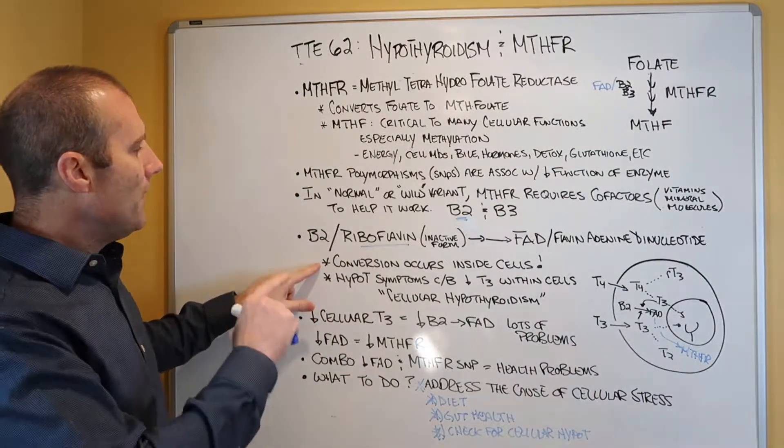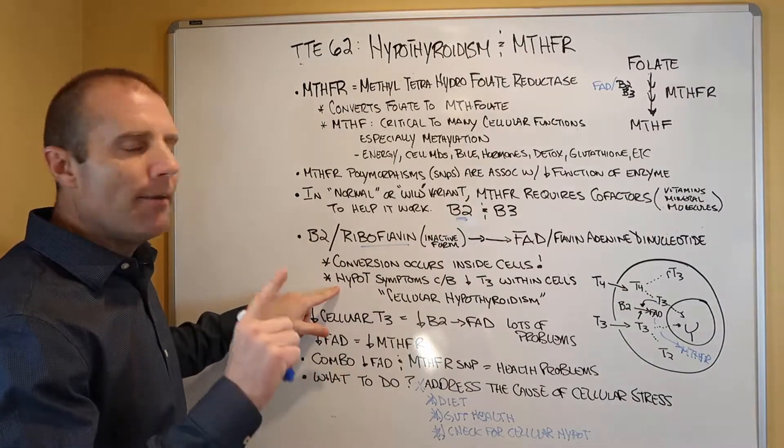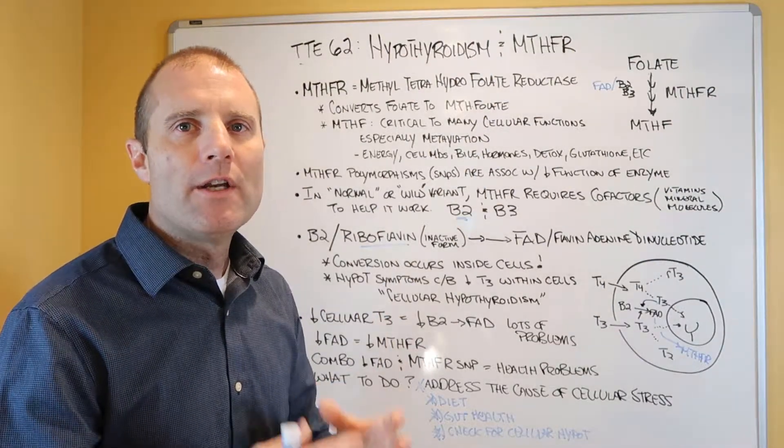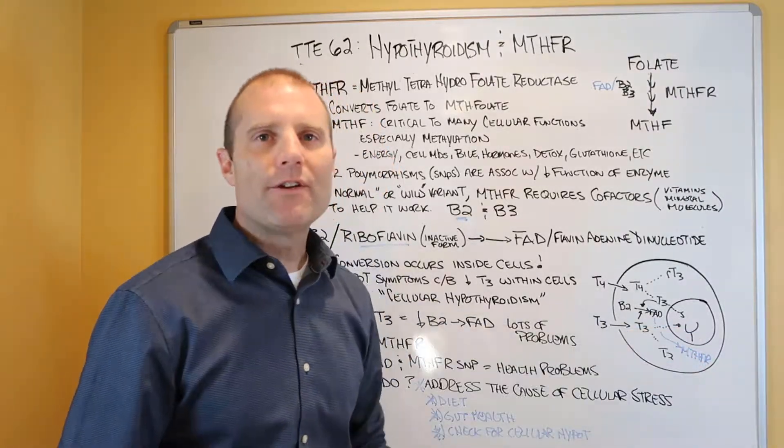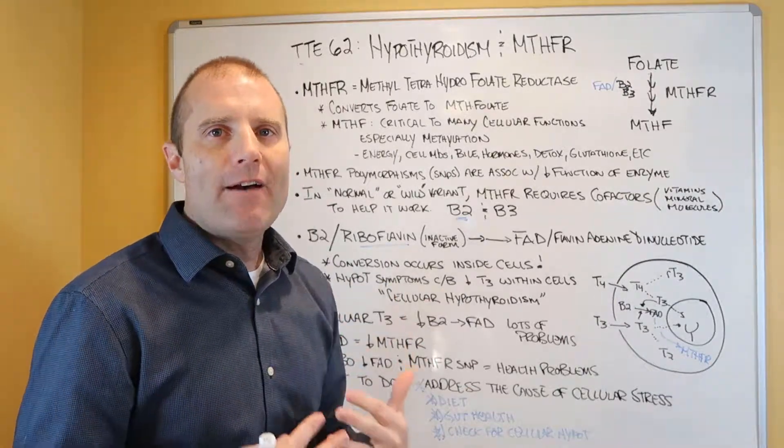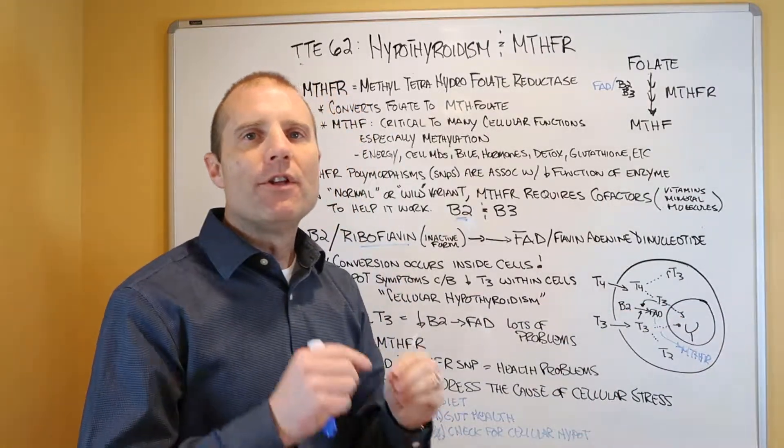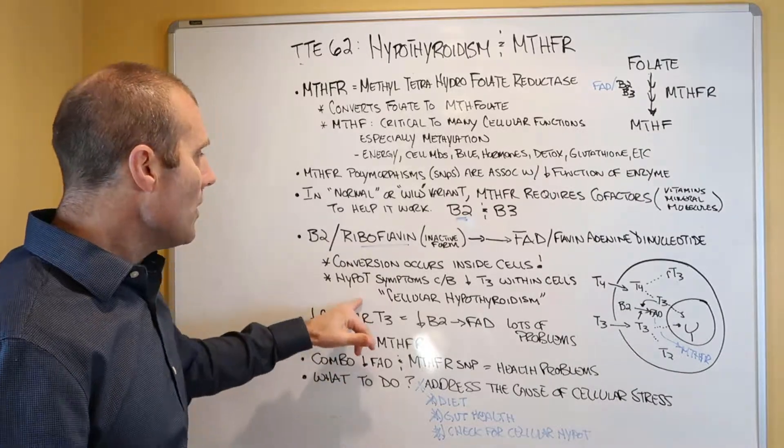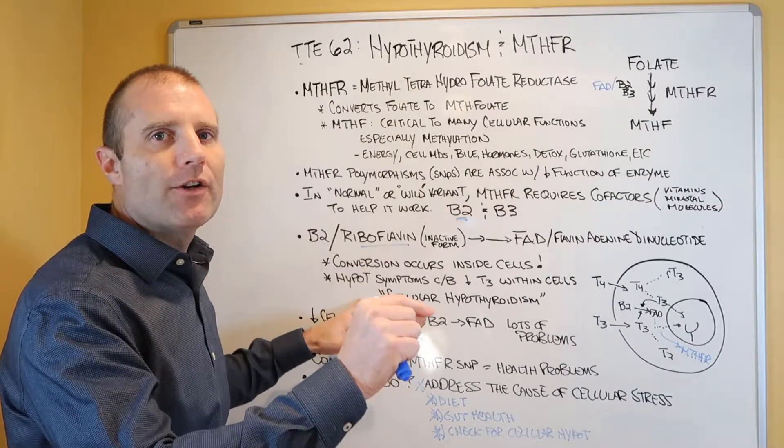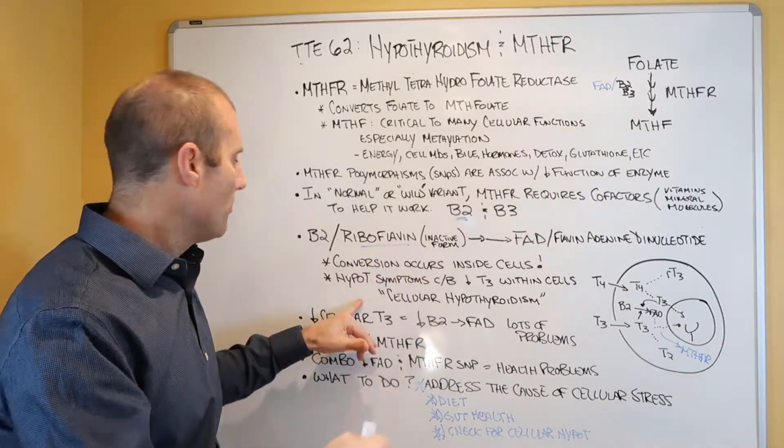The conversion of B2 to FAD occurs within the cells. When we talk about hypothyroidism, we talk about the symptoms of hypothyroidism are the result of deficient levels of T3 getting to the nucleus of your cells. It doesn't matter how much T4 or T3 is in the bloodstream. To not have hypothyroid symptoms, you need sufficient levels of T3, the active thyroid hormone, getting to the nucleus of your cells. We call this state of decreased T3 in the cells, cellular hypothyroidism. That can occur with a healthy and functional gland and regardless of what the T4, T3 levels are in your bloodstream.